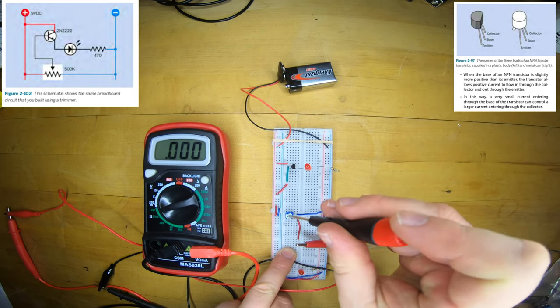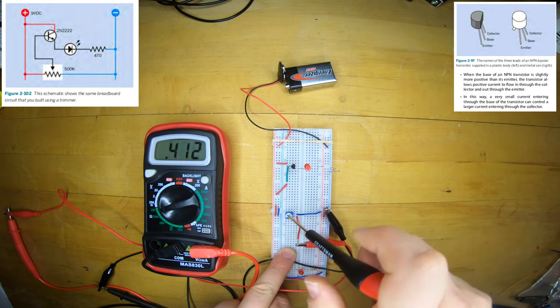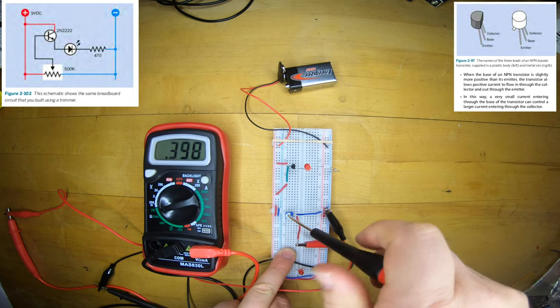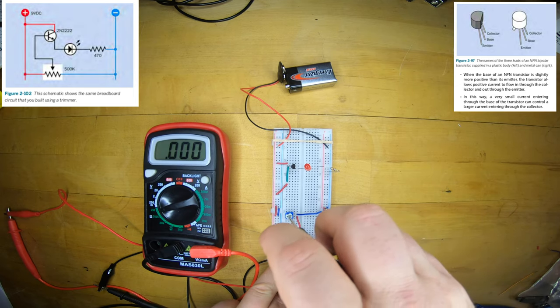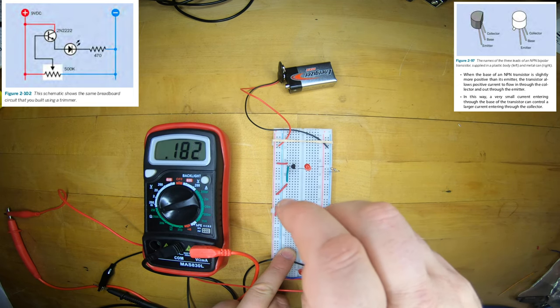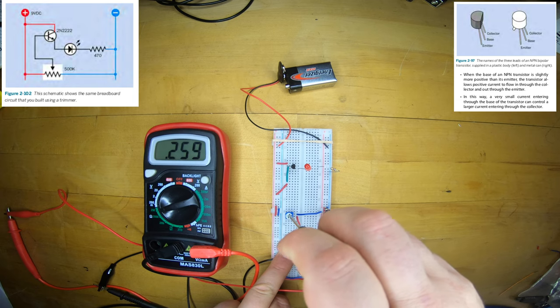But I move to measuring from an edge pin to a center pin. I find that as I spin the pot, the resistance goes from zero to the maximum value of about half a megaohm in this case. Just like the potentiometers we took apart earlier.